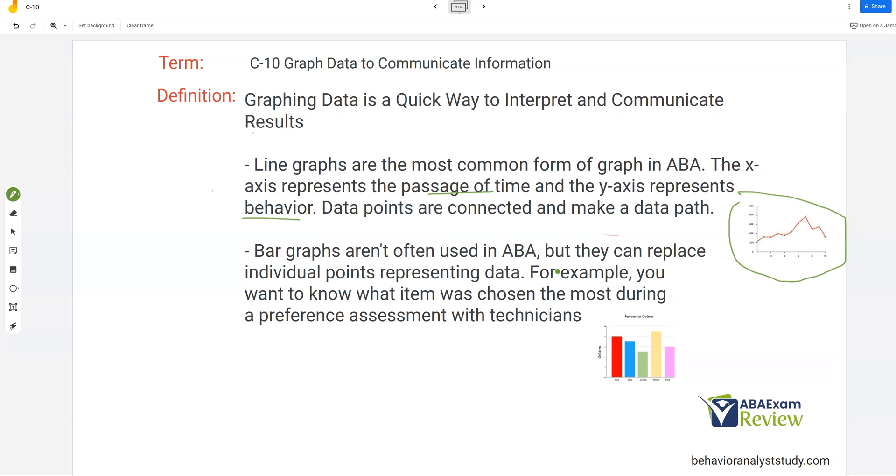Bar graphs aren't often used in ABA, but they can replace individual points representing data. One of the most common uses I've seen is, let's say, you have a staff preference assessment or a staff lunch, and you want to figure out who wants to eat what. So you offer pizza, salad, or burgers. And then you poll everybody, and you put them on a bar graph like this, and it's a quick way to see, okay, people like burgers this much, pizza this much, salad this much. This is just favorite color. I think you're all familiar with bar graphs. You're not going to use bar graphs a whole lot in ABA. Be familiar with what they do: they can replace individual points representing data.